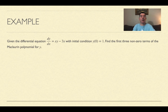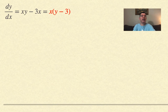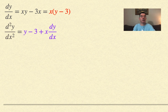Here's an example. We have dy/dx equal to xy minus 3x, and the initial condition is that the y value at x equals zero is one. We need to find the first three non-zero terms of the Maclaurin polynomial for y. So we're going to use derivatives to find an approximation — a Maclaurin polynomial that will approximate that function y. We write dy/dx as x times (y minus 3).